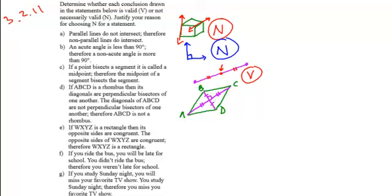The next part of the statement says the diagonals of ABCD are not perpendicular bisectors of one another, therefore ABCD is not a rhombus. Well, this is only true if it is a rhombus, therefore if this is not true, ABCD is not a rhombus. This is a valid conclusion.